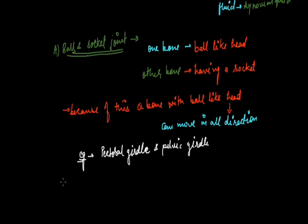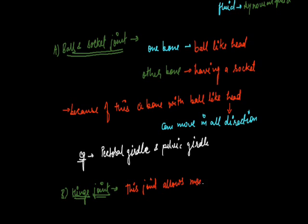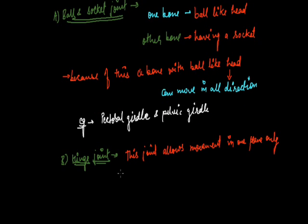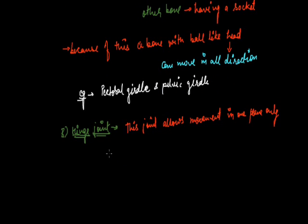The next kind of movable joint is the hinge joint. In this kind of joint, movement is allowed in one plane only — bones can move in one plane but cannot move in the opposite plane. This kind of joint is present in the elbow joint and the knee joint.